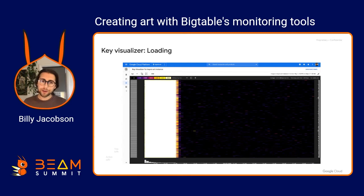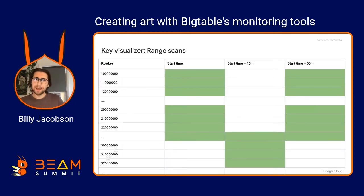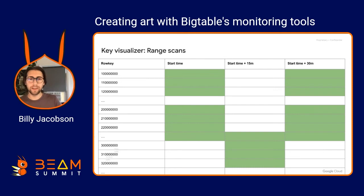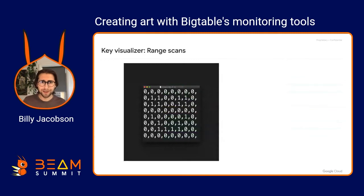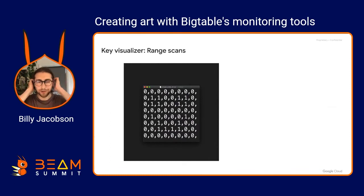I thought: can I query certain areas of row keys at certain times and get art to show up? I started simple — maybe if I scan all the row keys that start with 1 and all that start with 3 for 15 minutes (which is how long the intervals are), I could get something to show up. Then for the next 15 minutes, a different set, kind of making pixel art. So I wrote up a CSV by hand with zeros and picked the ones to make a smiley face.